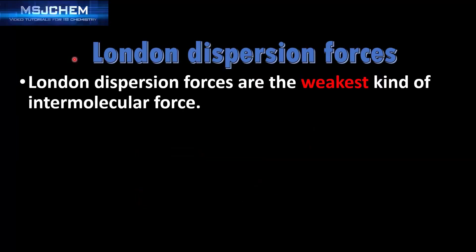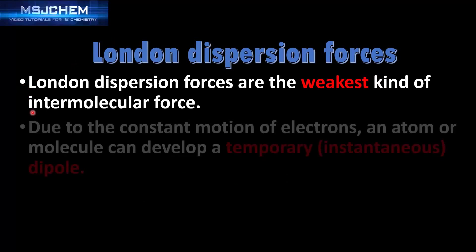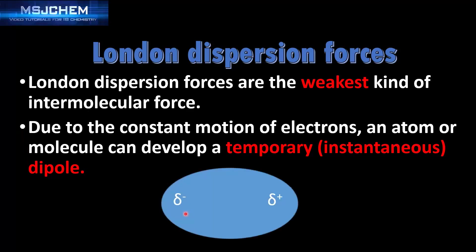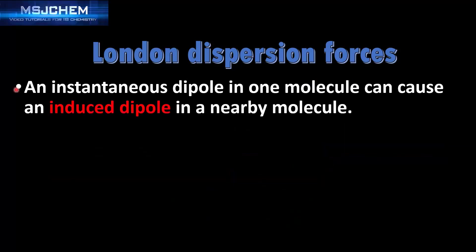London dispersion forces are the weakest kind of intermolecular force. Due to the constant motion of electrons, an atom or molecule can develop a temporary or instantaneous dipole. At any given time in an atom or molecule, the electrons might be on one side, giving it a negative dipole, while the other side will have a positive dipole — that's referred to as a temporary or instantaneous dipole. An instantaneous dipole in one molecule can cause an induced dipole in a nearby molecule.